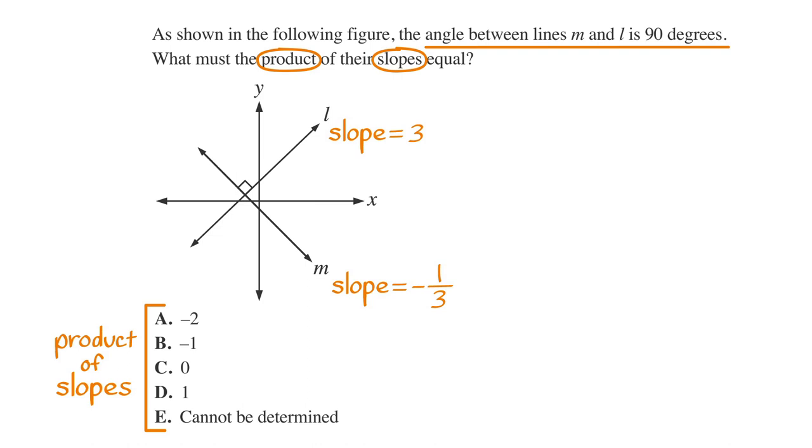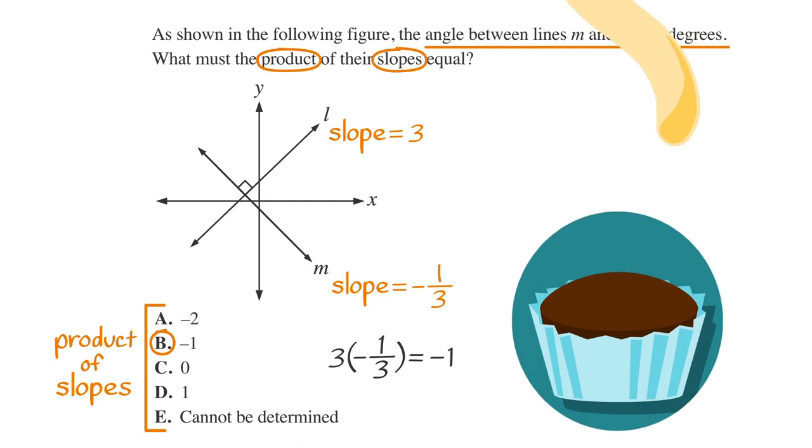Let's say the slope of line L is 3. The opposite reciprocal of that is negative one-third. That's the slope of line M. Now, all you have to do is multiply 3 times negative one-third. You end up with negative 1, which is choice B. All right, treat yourself for that one.